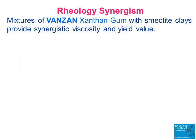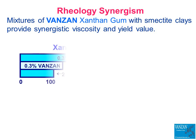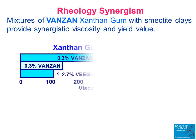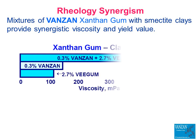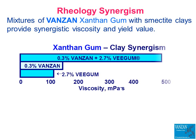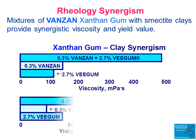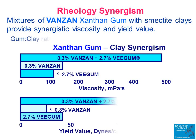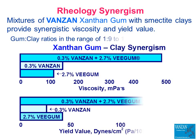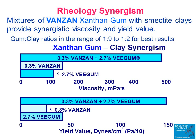Mixtures of xanthan gum with smectite clays or certain galactomannans provide synergistic rheological effects. The mixtures produce greater viscosity and yield value, and therefore greater thickening, stabilizing, and suspending properties than those developed by the individual components. Smectite clays particularly effective in combination with Vanzan include V Gum, Vannatural, and Vangel clay products, also available from Vanderbilt Minerals. A weight-to-weight ratio of Vanzan to smectite between 1:9 and 1:2 generally produces the most desirable results. This figure demonstrates the synergism between Vanzan and V Gum.